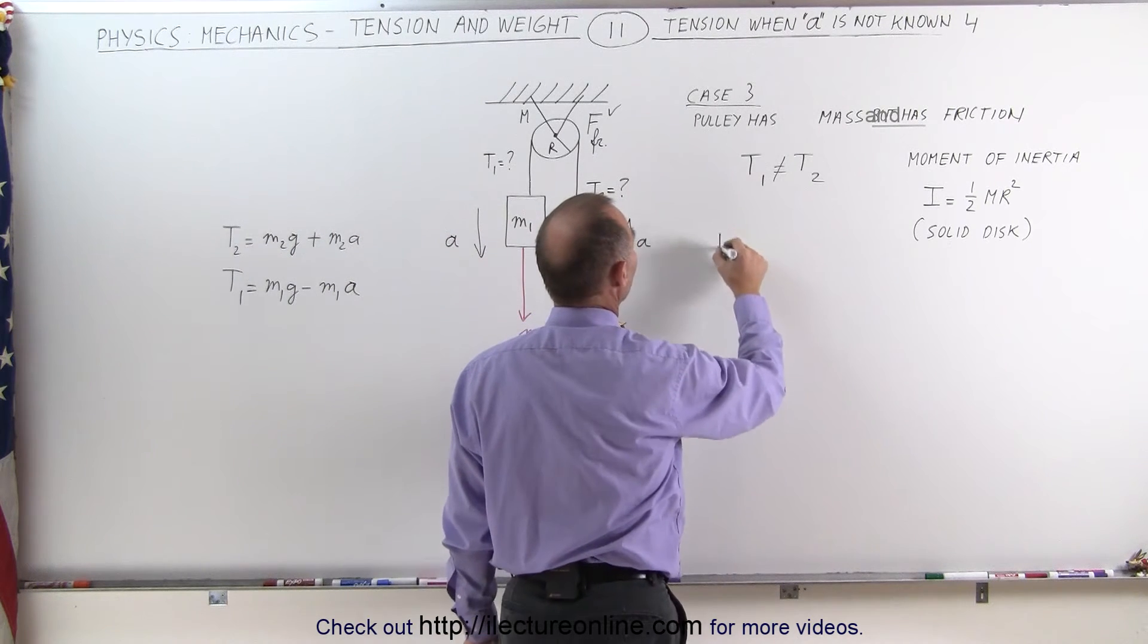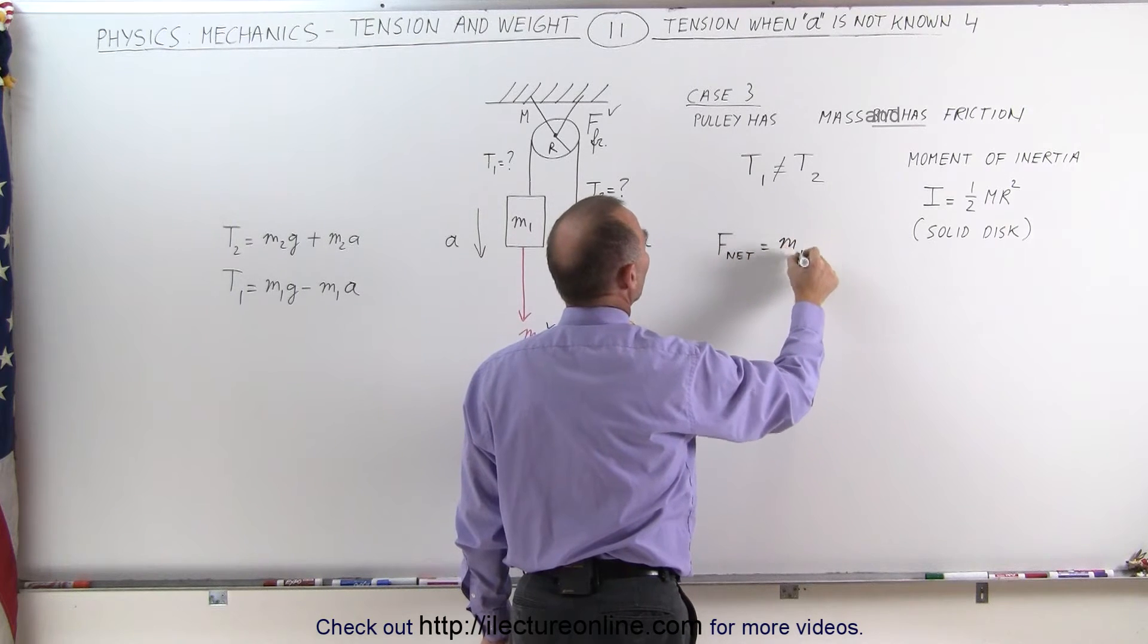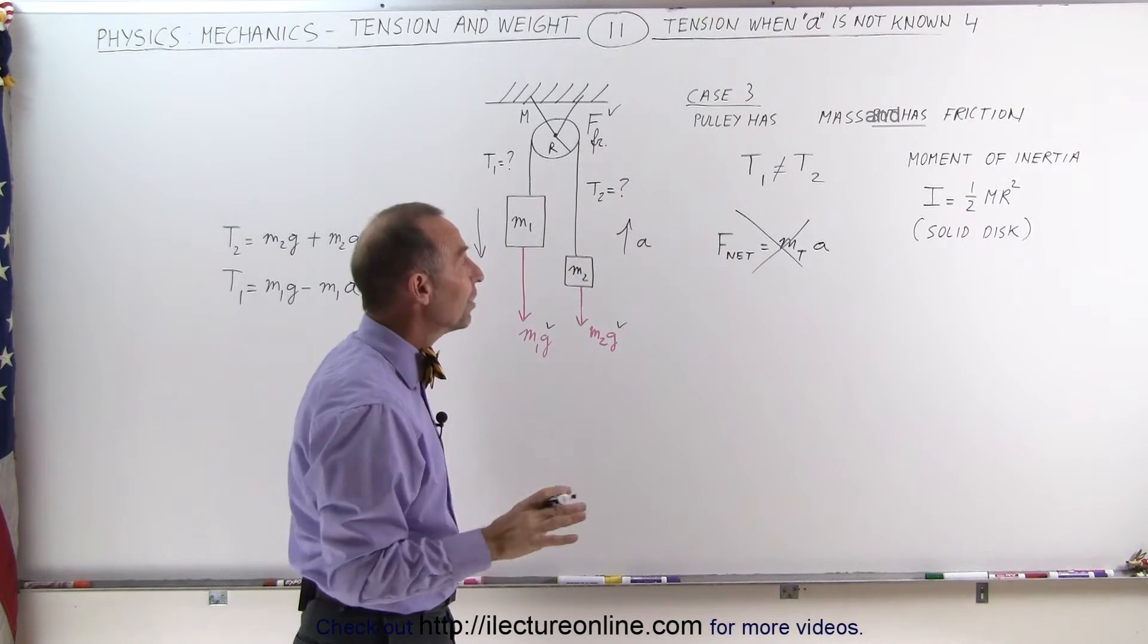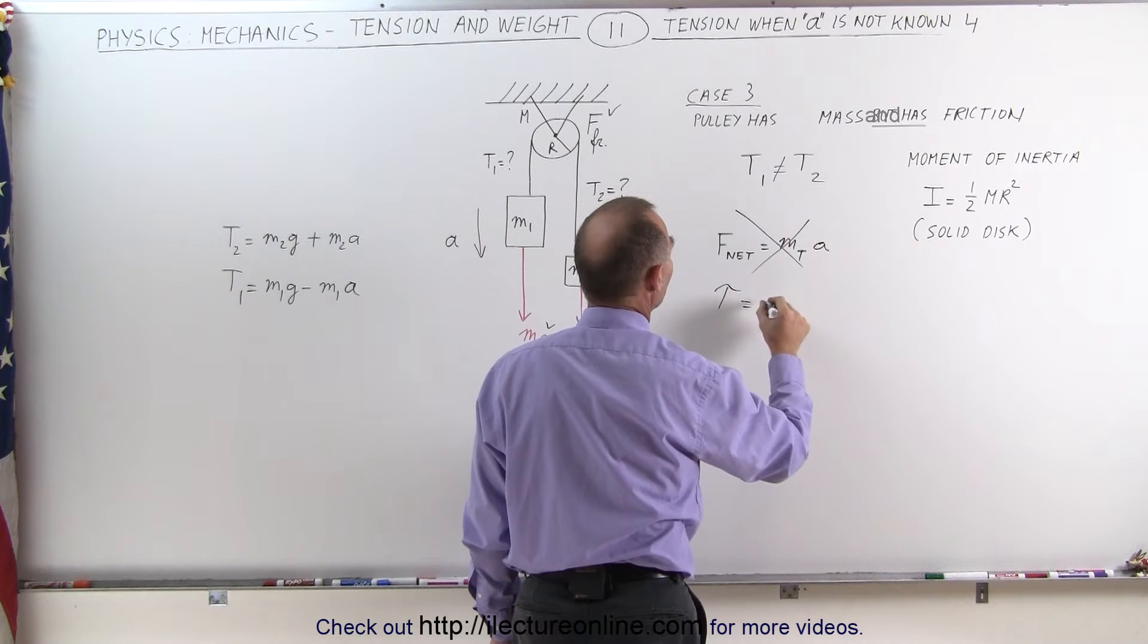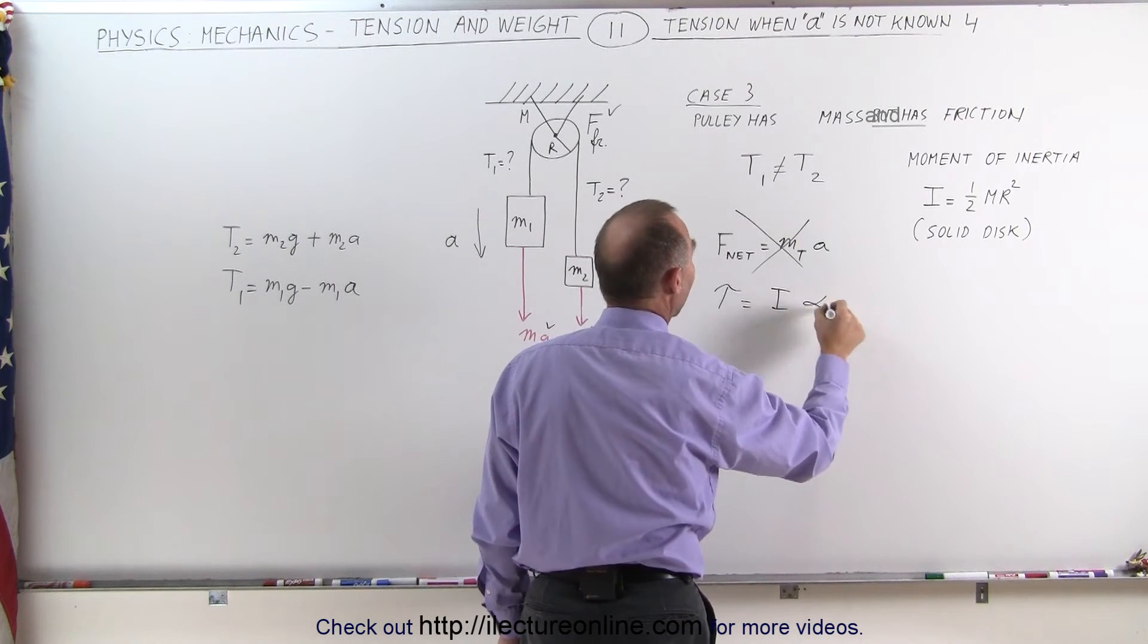Normally we use this equation, F net is equal to the total mass times acceleration, but in this case we can't use that equation. We have to use the rotational equivalent, which tells us that the torque is equal to the moment of inertia of the pulley times the angular acceleration.